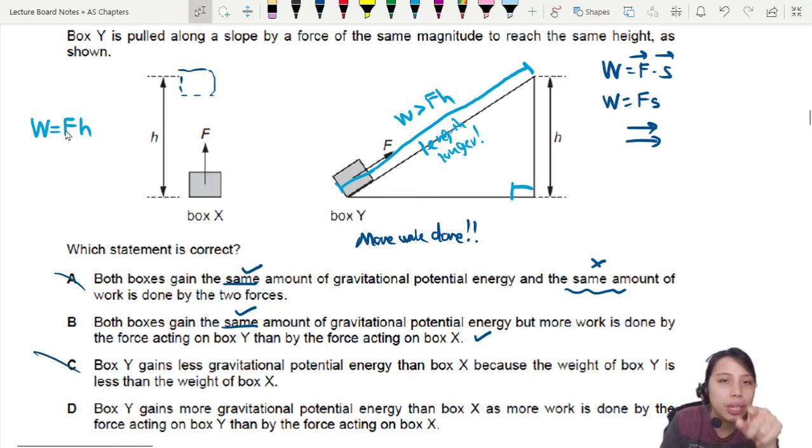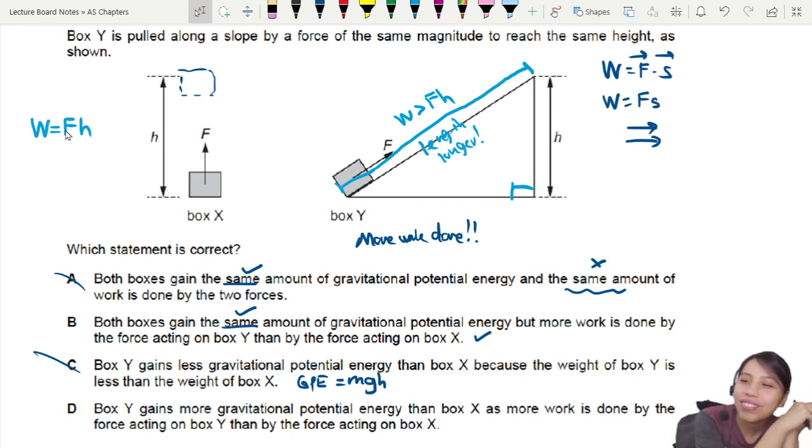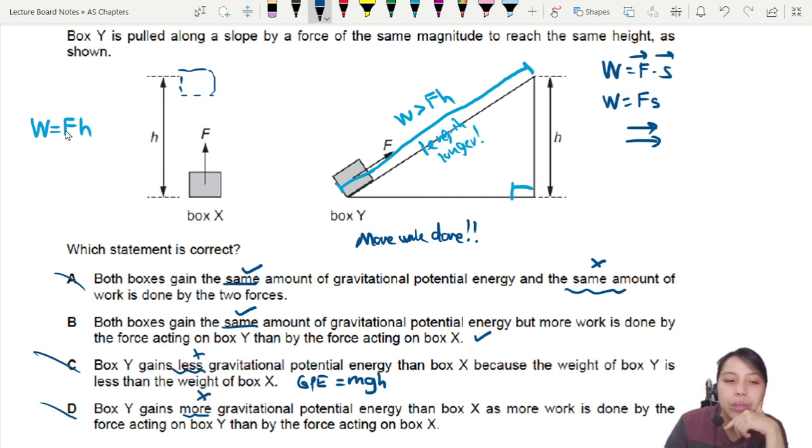By the way, we'll learn more about GPE. But GPE, gravitational potential energy, is calculated by MGH. Maybe you remember this from secondary school. D says box Y gains more GPE. Ayyoh, same la. We already said it's the same. So wrong. That leaves us with B, which will be the best choice for this.